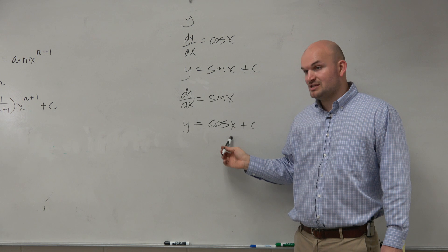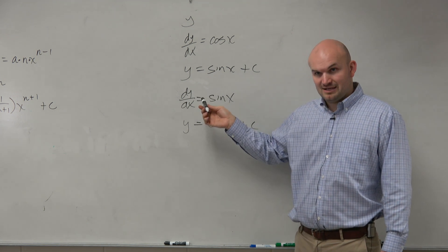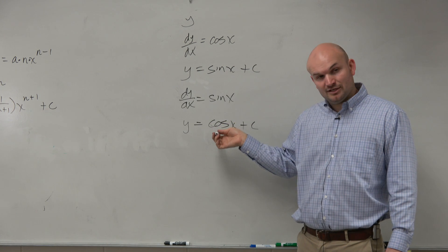So the derivative of cosine of x is negative sine of x. So obviously, I know that that is not the correct antiderivative.